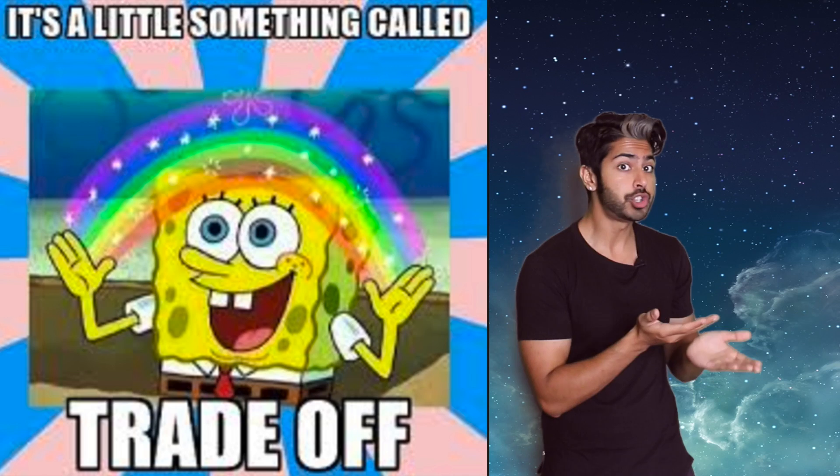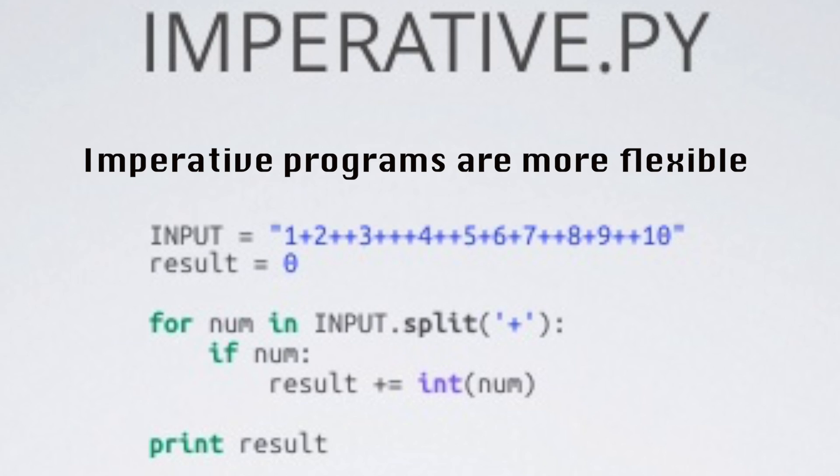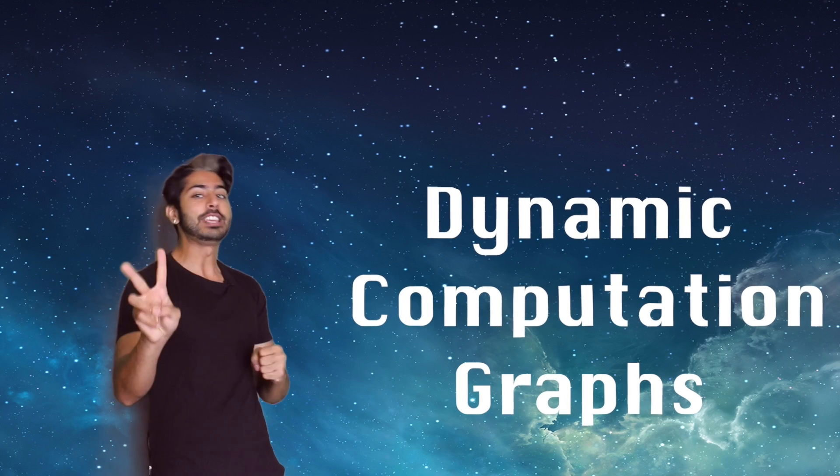Symbolic programs are more efficient since you can safely reuse the memory of your values for in-place computation. TensorFlow is made to use symbolic programming. Imperative programs are more flexible since Python is most suited for them, so you can use native Python features like printing out values in the middle of computation and injecting loops into the computation flow itself.